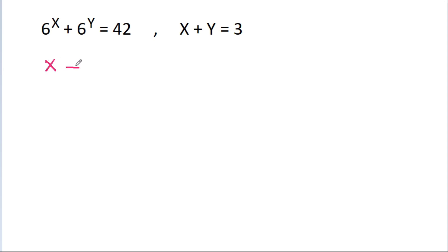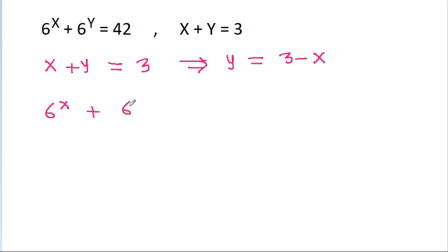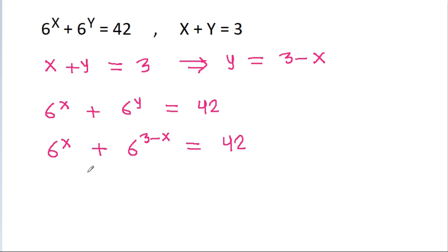We have x plus y is equal to 3, so y is equal to 3 minus x. Substituting into 6 power x plus 6 power y equals 42, we get 6 power x plus 6 power (3 minus x), which is 6 power x plus 6 power 3 divided by 6 power x, equal to 42.